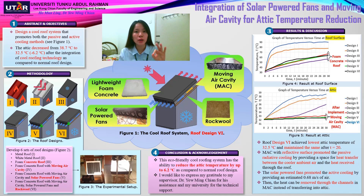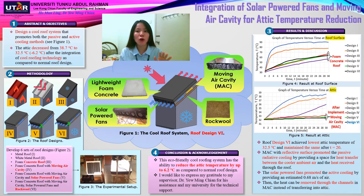Roof design 3 is the foam concrete roof, which is the basic design system without the moving air cavity and solar power fans. For roof designs 4, 5, and 6, the moving air cavity, solar power fans, and rock wool were added in each of the roof designs to study the performance of each co-roof component.